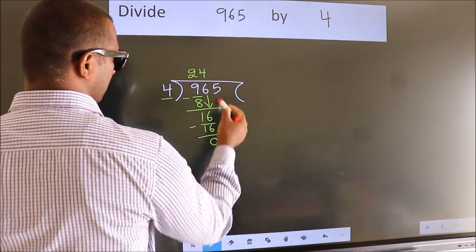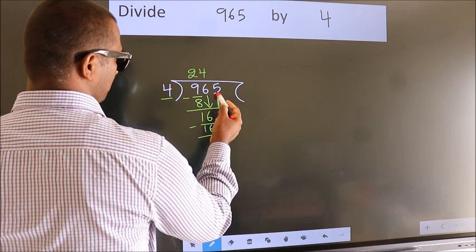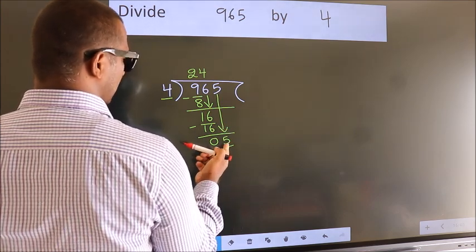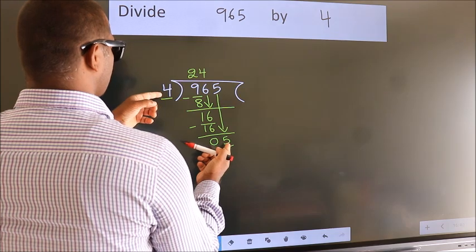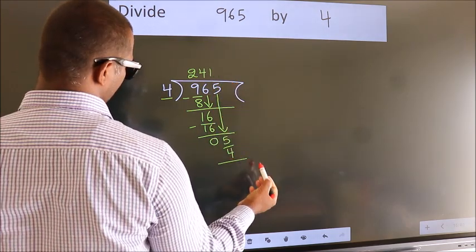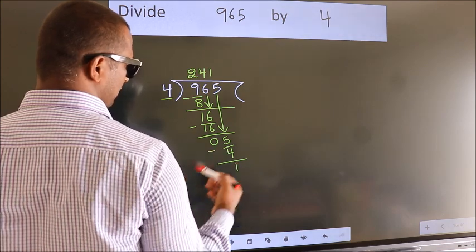After this, bring down the beside number. So, 5 down. So, 5. A number close to 5 in 4 table is 4 ones, 4. Now, we subtract. We get 1.